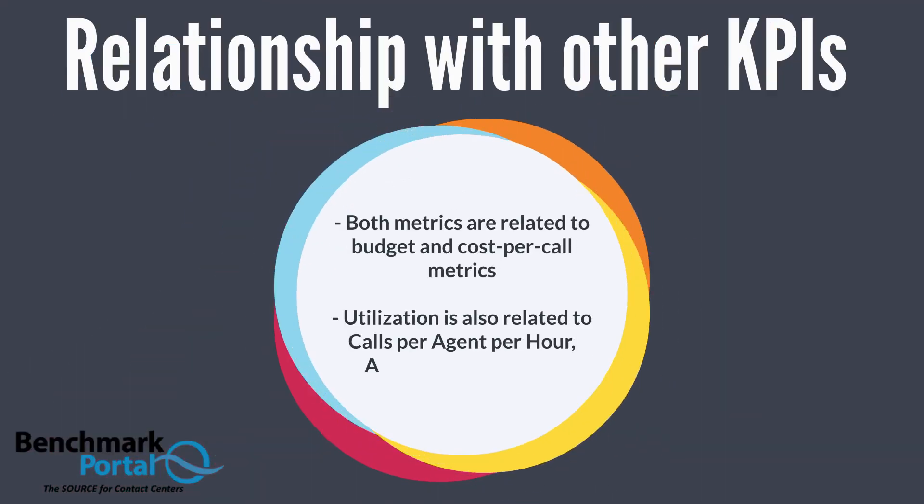Both occupancy and utilization are, of course, tied to budget and cost-per-call metrics. Utilization also interacts with calls per agent per hour, since the higher the utilization rate, the less time agents will be sitting waiting for calls and the more calls they will handle. Handle time — with its components of talk time and after-call work time — will also interact with utilization.